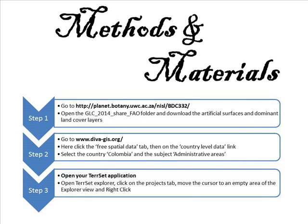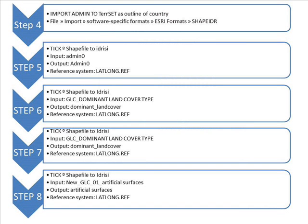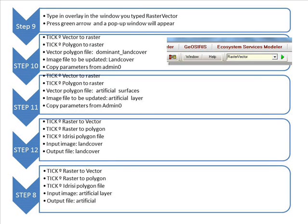Methods and materials. Download your GLC global land cover layers from Planet Botany. In Diva-GIS, download your administrative areas. In Tercet, a new project was created by right-clicking the grey area of the Tercet Explorer to create a new default folder. Import the admin layers in Tercet as well as your GLC-dominant layer and new artificial surfaces. Remember to change your referencing system to lat-long. Convert all the imported layers — artificial and land cover — to raster layers.